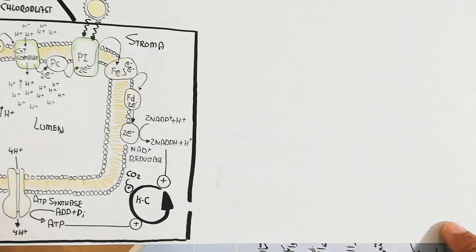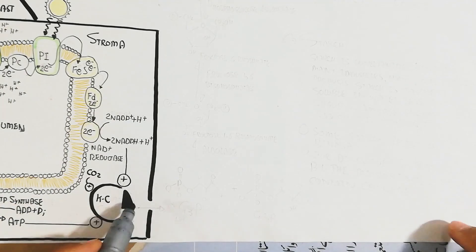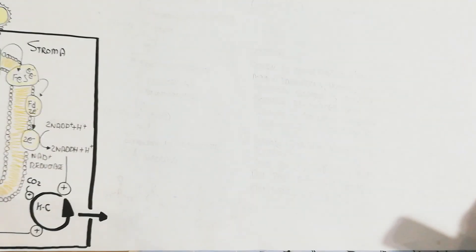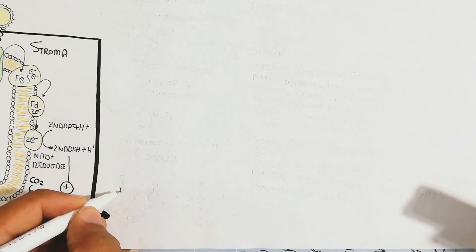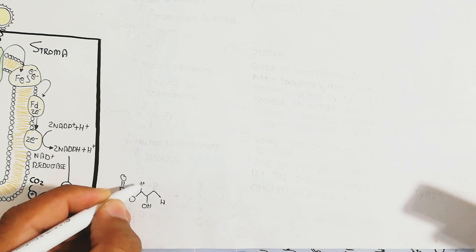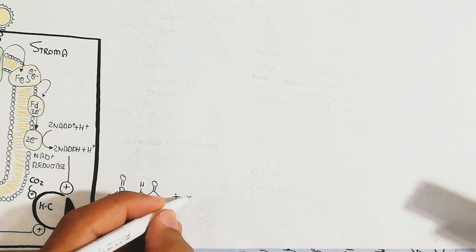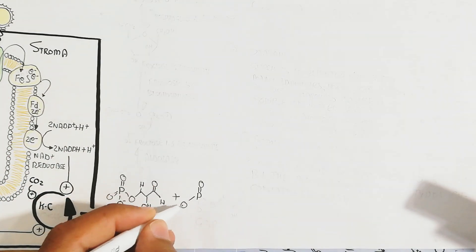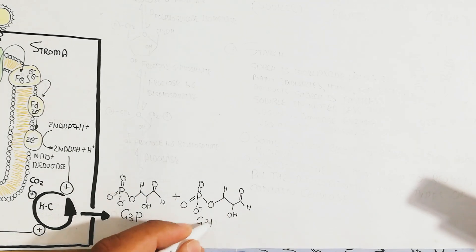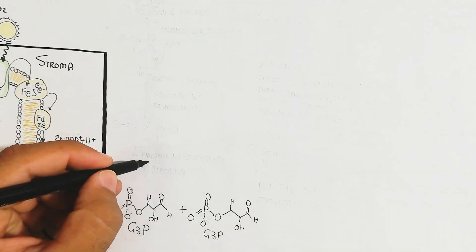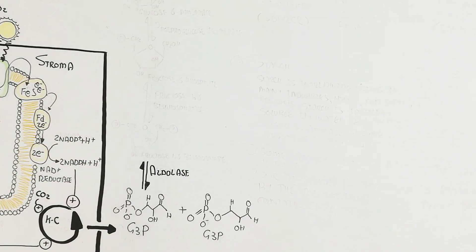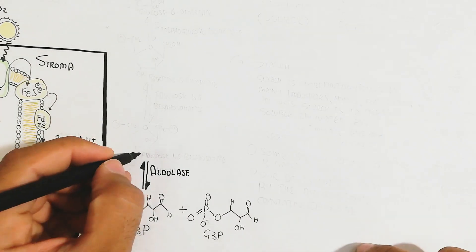ATP synthase enzyme is used to produce ATP from proton pumping. Both products — ATP and NADPH — are used in the Calvin cycle. The Calvin cycle produces a three-carbon molecule known as G3P, glyceraldehyde-3-phosphate. Two G3P molecules giving a total of six carbons are combined using the aldolase enzyme to produce fructose-1,6-bisphosphate.